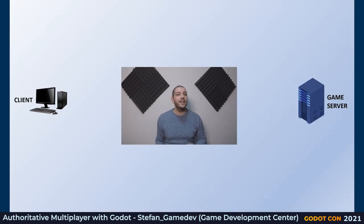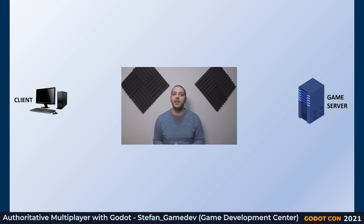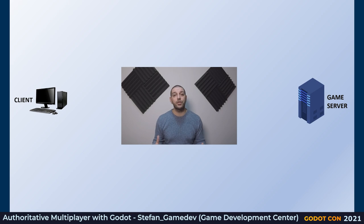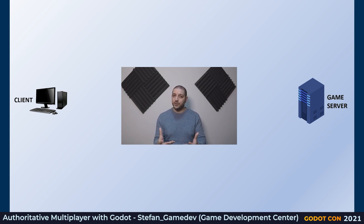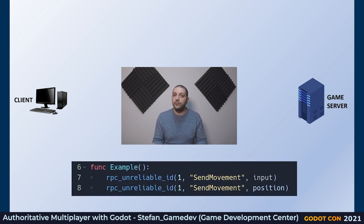Let's get into the three examples. The first is player synchronization across multiple clients. Once the player is authenticated, it connects directly to the game server — only these two become important. The client needs to inform the server of its movement so the server can distribute that movement to all peers. We have two options: we can either send the input data — move forward, backward, left, right — or we can send the positional data as a Vector2 or Vector3. There are pros and cons to both methods.